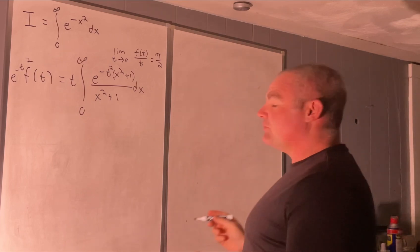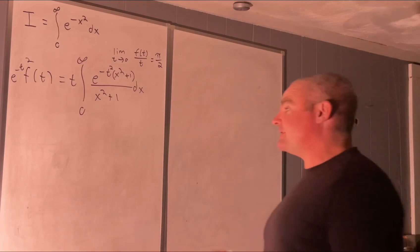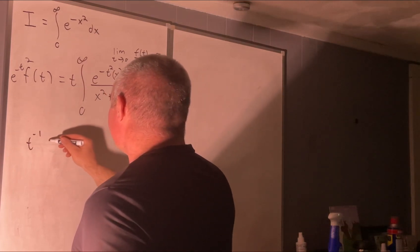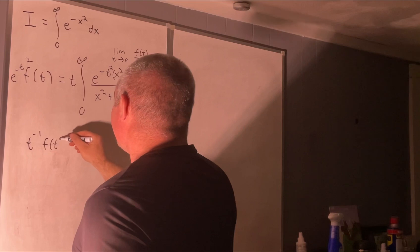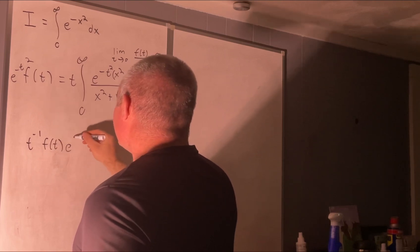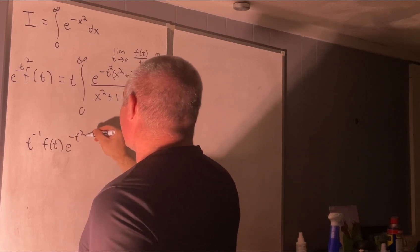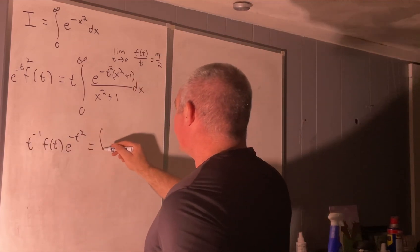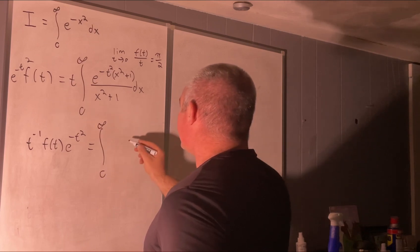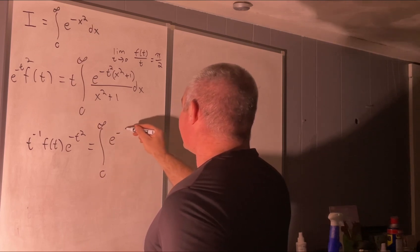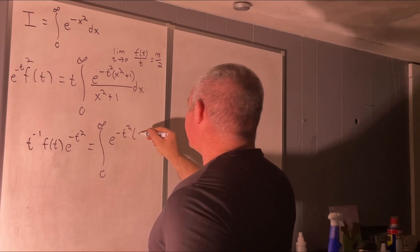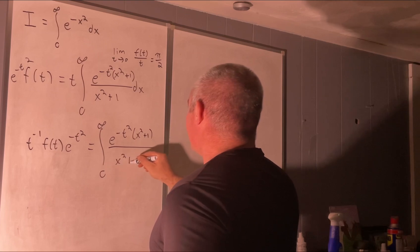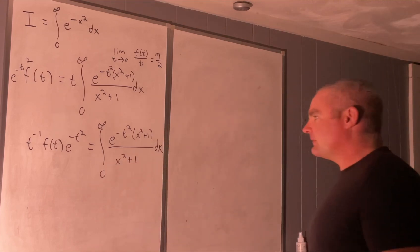The next step is to divide both sides by T. So now we have T to the negative 1 times F(T) times e to the negative T squared, equal to the integral from zero to infinity of e to the negative T squared times (X squared plus 1) over X squared plus 1, DX.